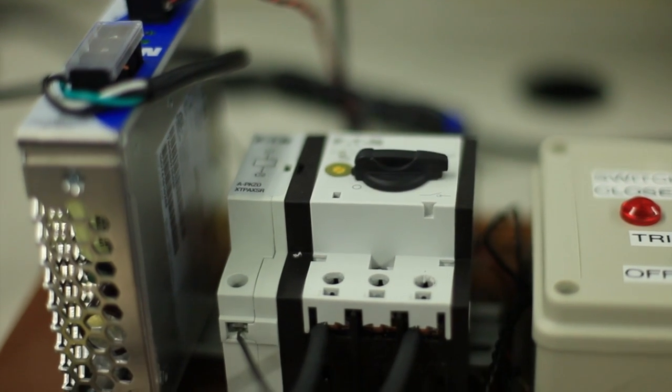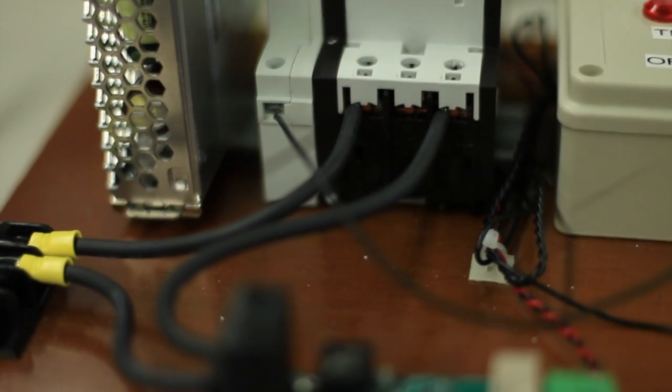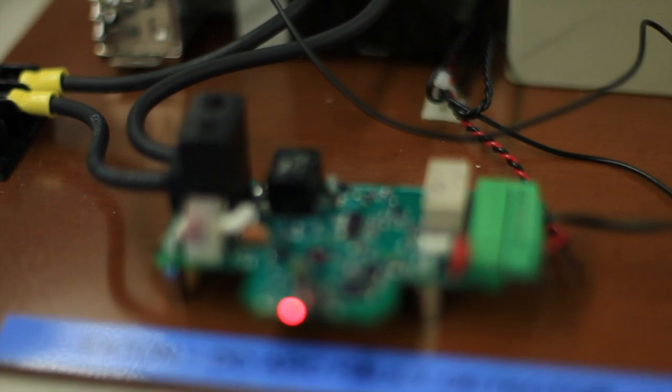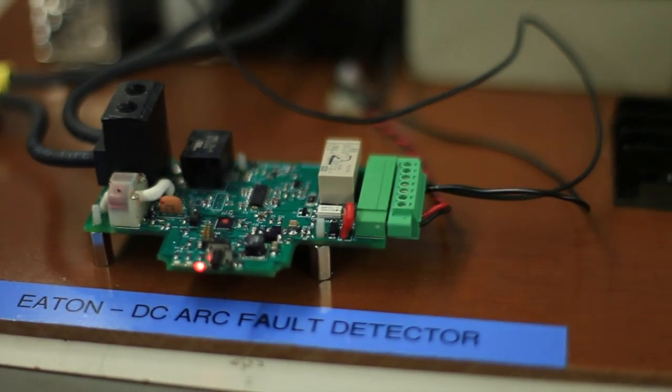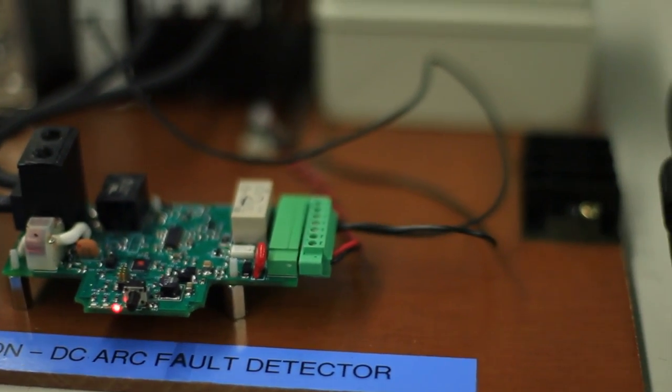The DC arc fault detector uses intelligent detection to sense arcing in the connected electrical circuit, all the while analyzing real-time conditions to reduce the occurrence of false trips.